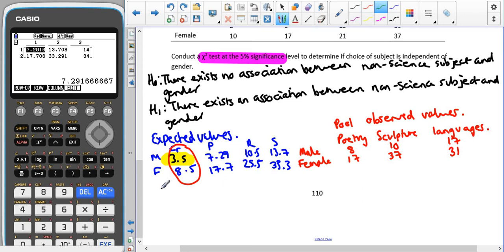So now this is another table, which is our pooled expected values. And now I can shorten them again to male, female, poetry, sculpture and languages. And we can see we've got 7.29, 13.7, and 14, 17.7, 33.3 and 34. And as a way to double check this, they should be the same as if we were to add them together in this expected values table here. So we can see that the poetry expected values stay the same. The sculpture expected values stay the same. 3.5 add 10.5 gives us 14. And 8.5 plus 25.5 does give us 34. So that's a way that we can double check that we did our adding and then putting it back in the calculator correctly.